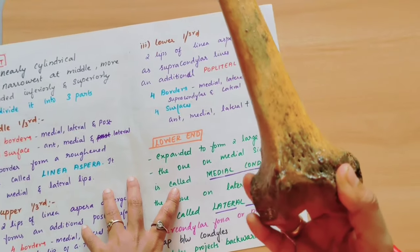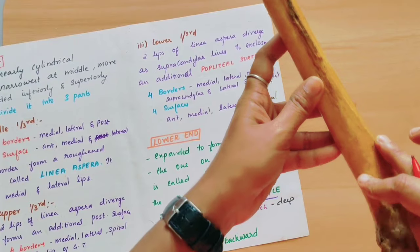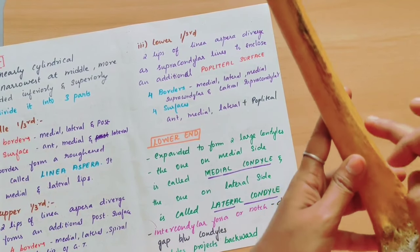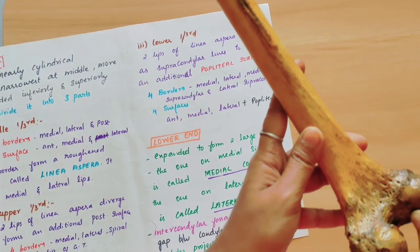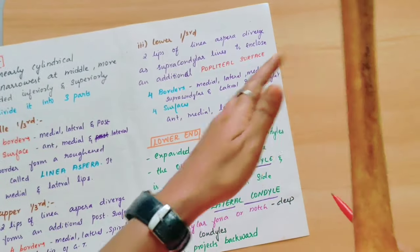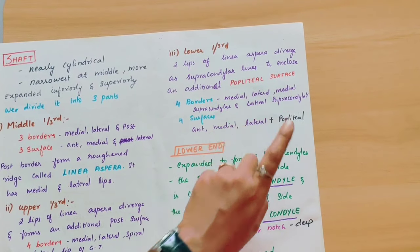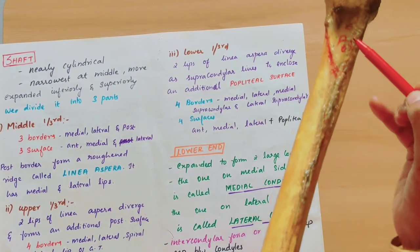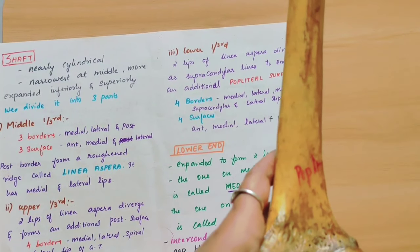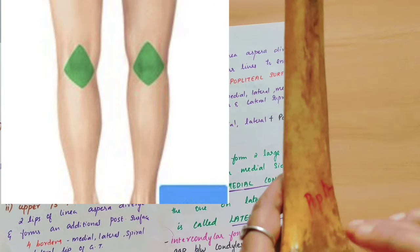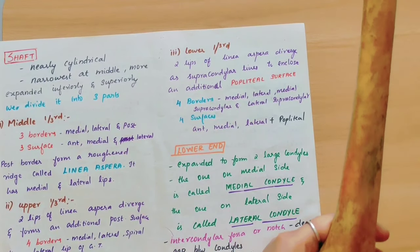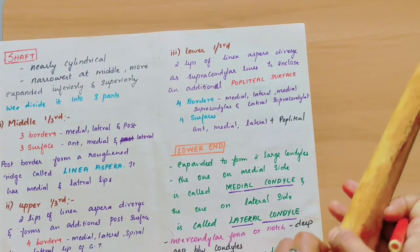In the lower one third, the linea aspera diverges into two lines called the supracondylar lines — the medial supracondylar line and the lateral supracondylar line. The two lips of the linea aspera diverge as supracondylar lines to enclose an additional popliteal surface, which is on the posterior side. The medial and lateral borders are common to all three parts.